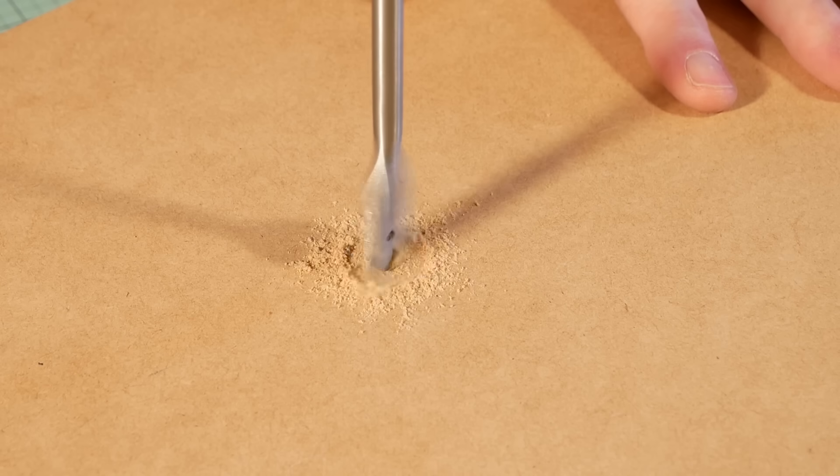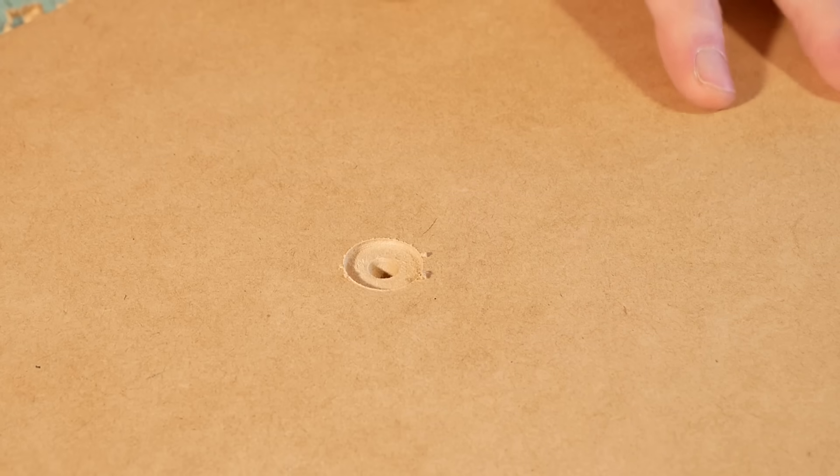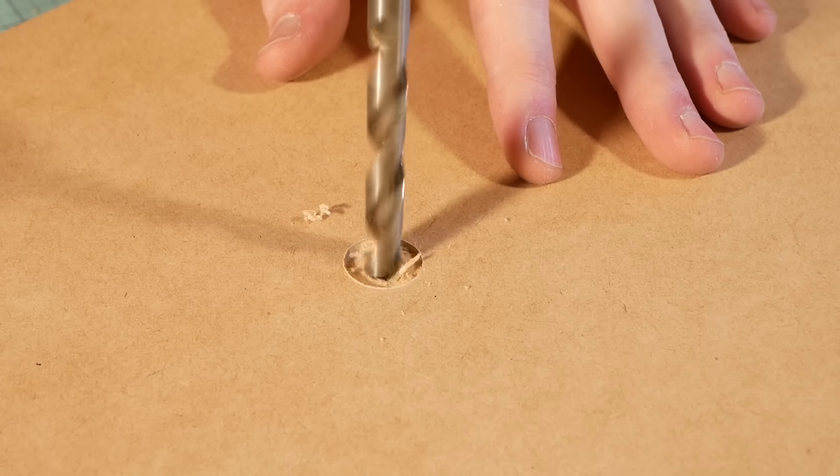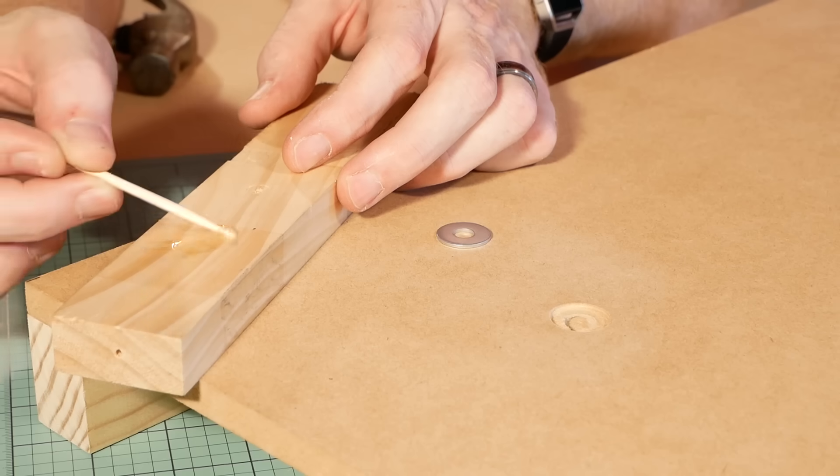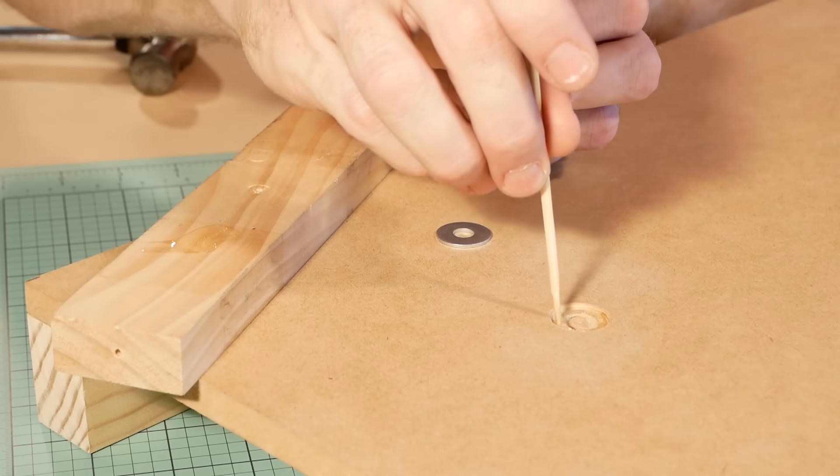To prevent the hot wire from burning the wood I flush mount a washer into the surface. First by using a spade bit and drilling out just enough to have the washer sit flush. I can then drill out the rest of the hole using a smaller drill bit, and glue the washer in place using a fast drying epoxy glue.